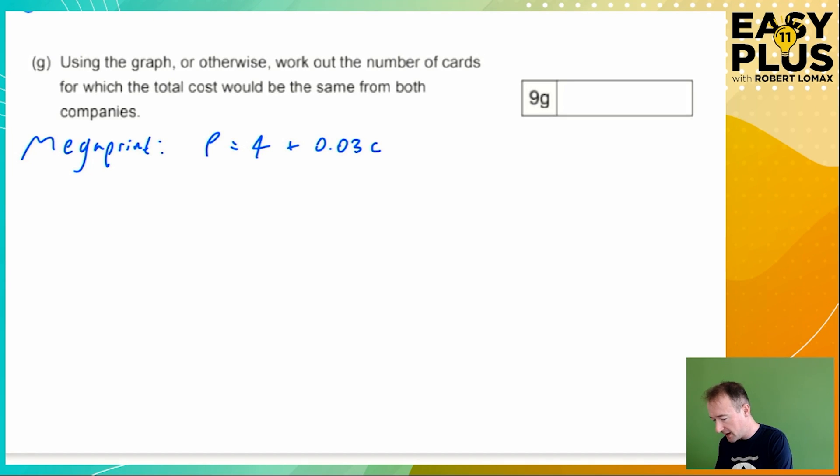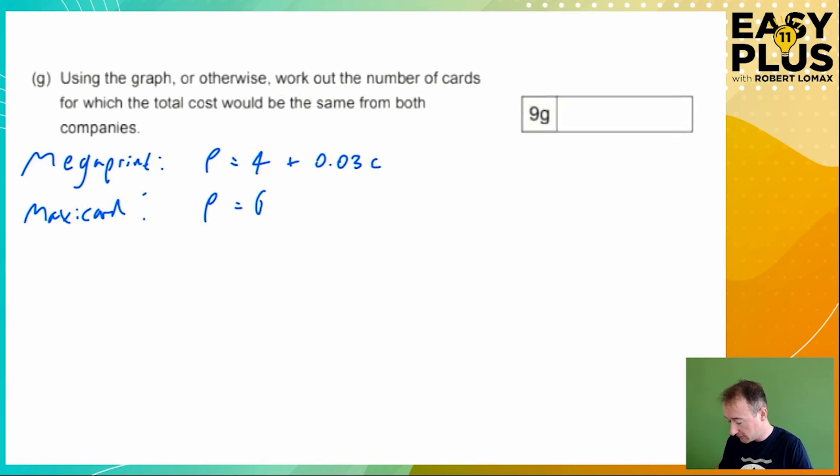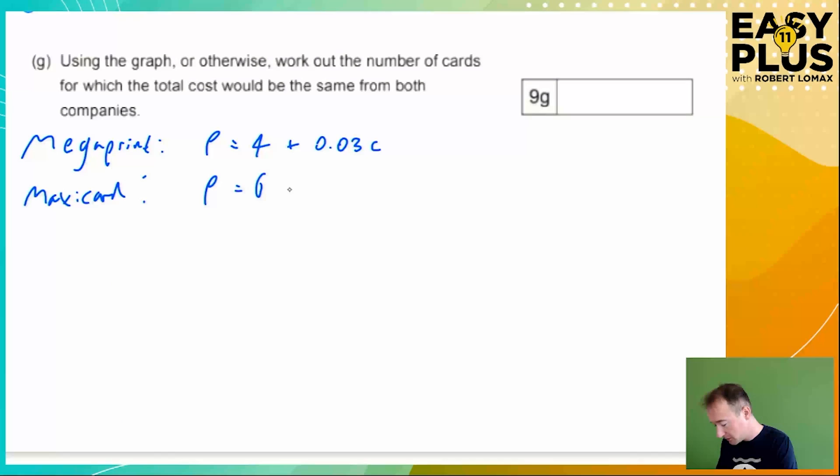Now let's have a look at Maxicard. So Maxicard, the price that you pay, is a base cost of £6. We've been told that the cost is £6 for an order, that's the fixed cost, plus something else. So £6 plus a certain amount per card. But we don't know that yet so we need to work it out. So what is the charge per card when we order from Maxicard? How can we work this out?